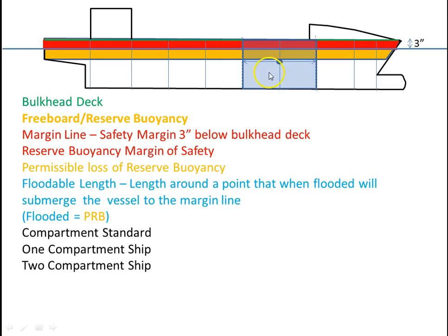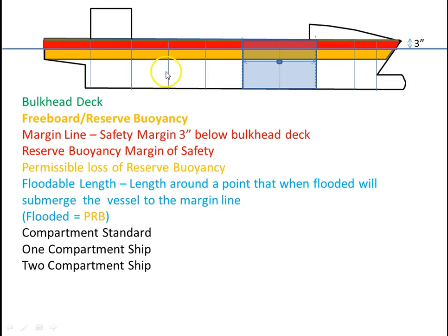Now if we flood these two compartments, it equals this volume and we still have our reserve buoyancy from the margin line up to the bulkhead deck. If we flooded these two — same thing. If you imagine taking damage on the side of the ship, you would flood both of these compartments. So having a two-compartment ship is actually a pretty good idea.